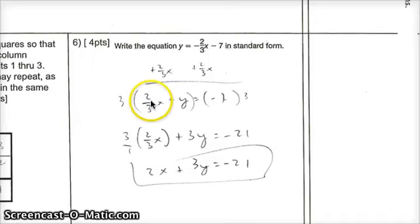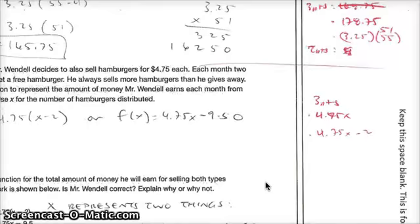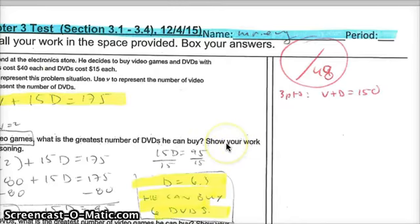3 times 2 thirds will give us 2. Remember you can make 3 a fraction by putting over 1. This will become 3 times 2 is 6 divided by 3 is 2. Now you also need to distribute that 3 to the second expression will give us 3y. So 3 times 2 thirds will give us 2x and 3 times y will give us 3y. Over here that will be 3 times negative 7. That will give us negative 21. That side was 24 points and the test was out of 48.